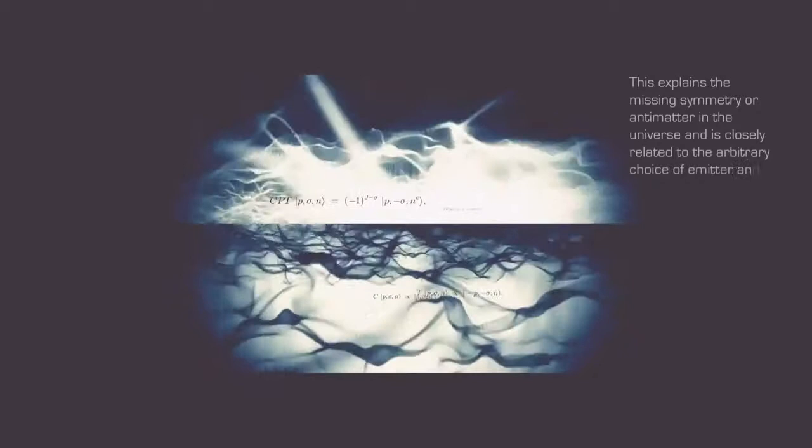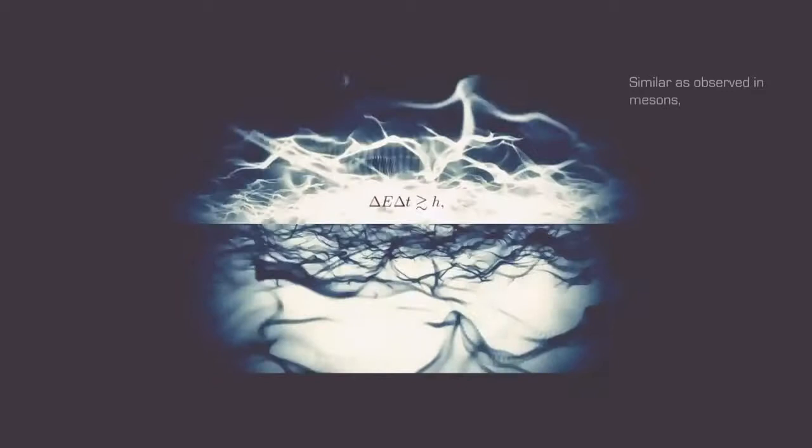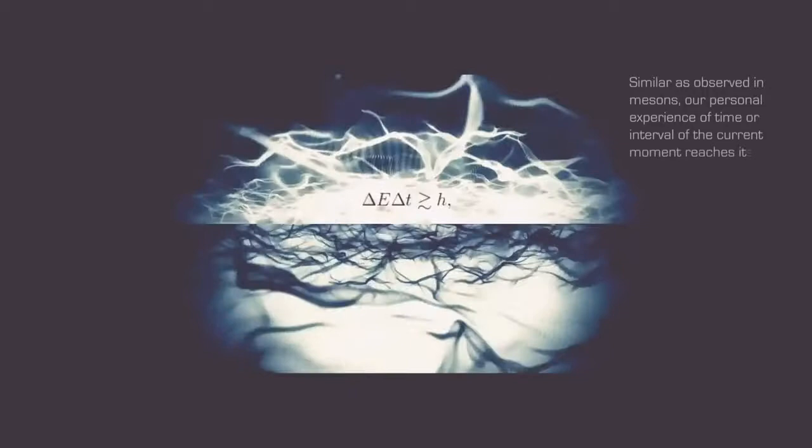This has significant consequences when applied to C. From a quantum perspective, every instance of C has an anti-C. This explains the missing symmetry or antimatter in the universe and is closely related to the arbitrary choice of emitter and absorber in the Wheeler-Feynman time-symmetric theory. The unperturbed time T in the Uncertainty Principle is the required time or cycle for quanta to exist. Similar as observed in mesons, our personal experience of time or interval of the current moment reaches its threshold when C is cancelled out by its anti-C.